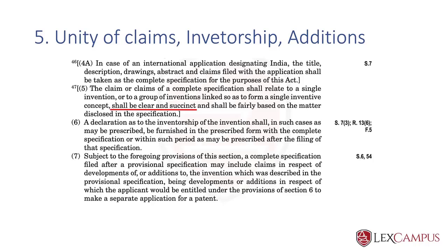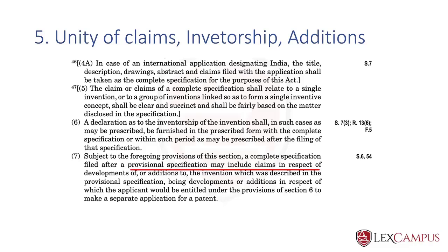Any claim that is not fairly based on the matter disclosed will not be allowed. Any claim you include should be described either as an embodiment or in the description. The description, disclosure of how it works, the method of working, and the best method — all should be contained in the description before you can make a claim. In subsection 6, the declaration as to inventorship shall be furnished in a prescribed form within the prescribed period, and the form is Form 5.